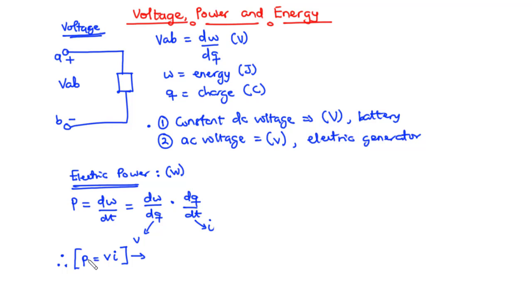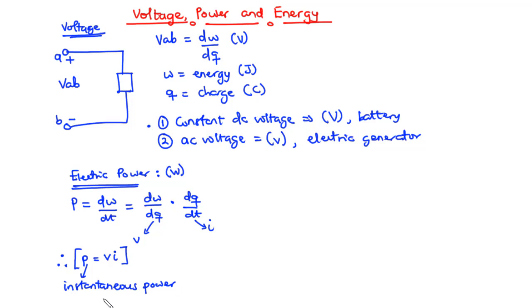This P is a time-variant quantity, and hence we call it the instantaneous power — the power at any instance of time in the circuit.